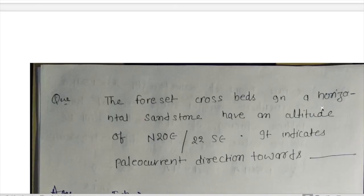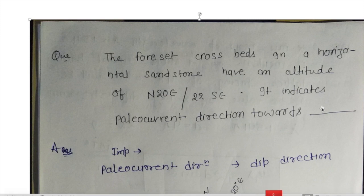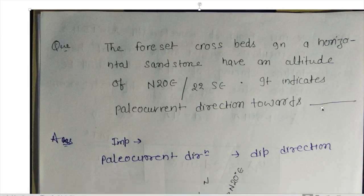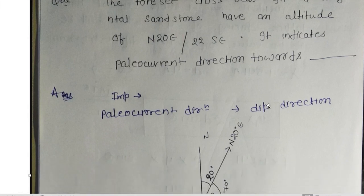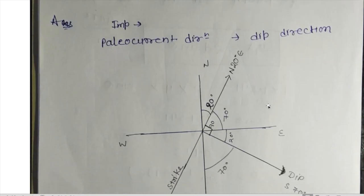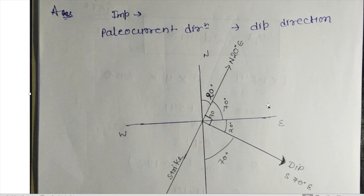Moving to the next question: foreset cross beds in a horizontal sandstone have an attitude of N20°E, 22° southeast. What is the paleocurrent direction? The important concept here is that to get the paleocurrent direction, we first need to know the dip direction, as the paleocurrent direction always lies in the direction of the dip.